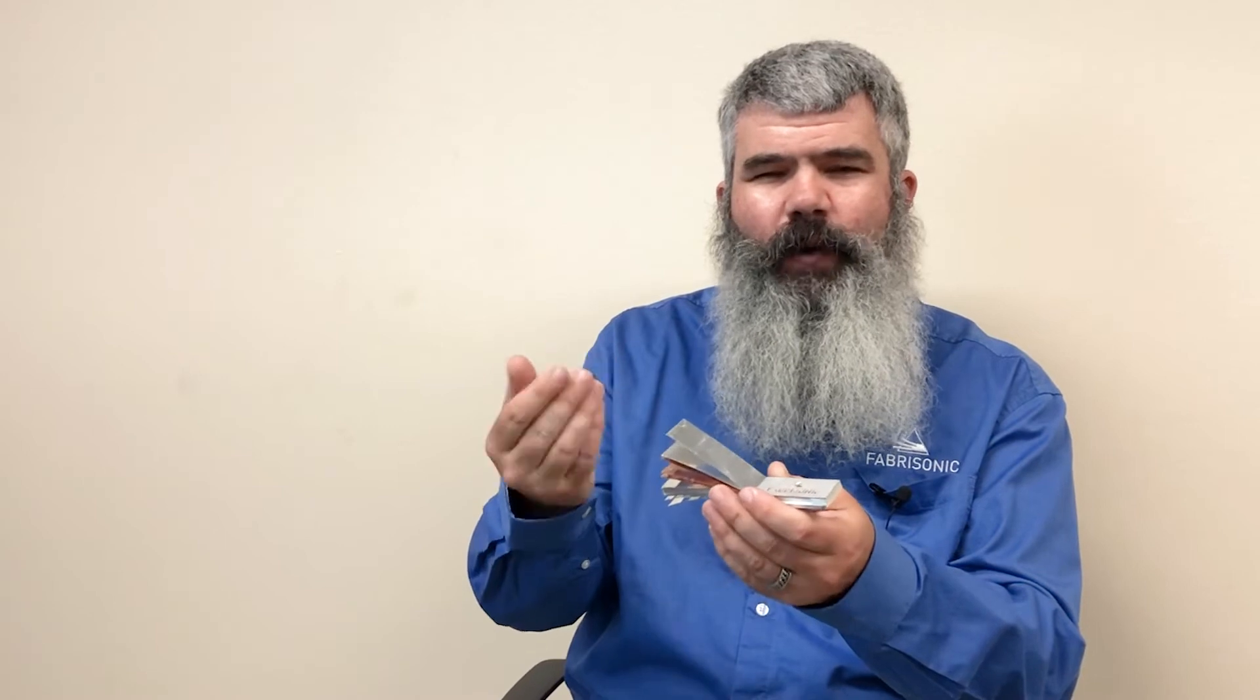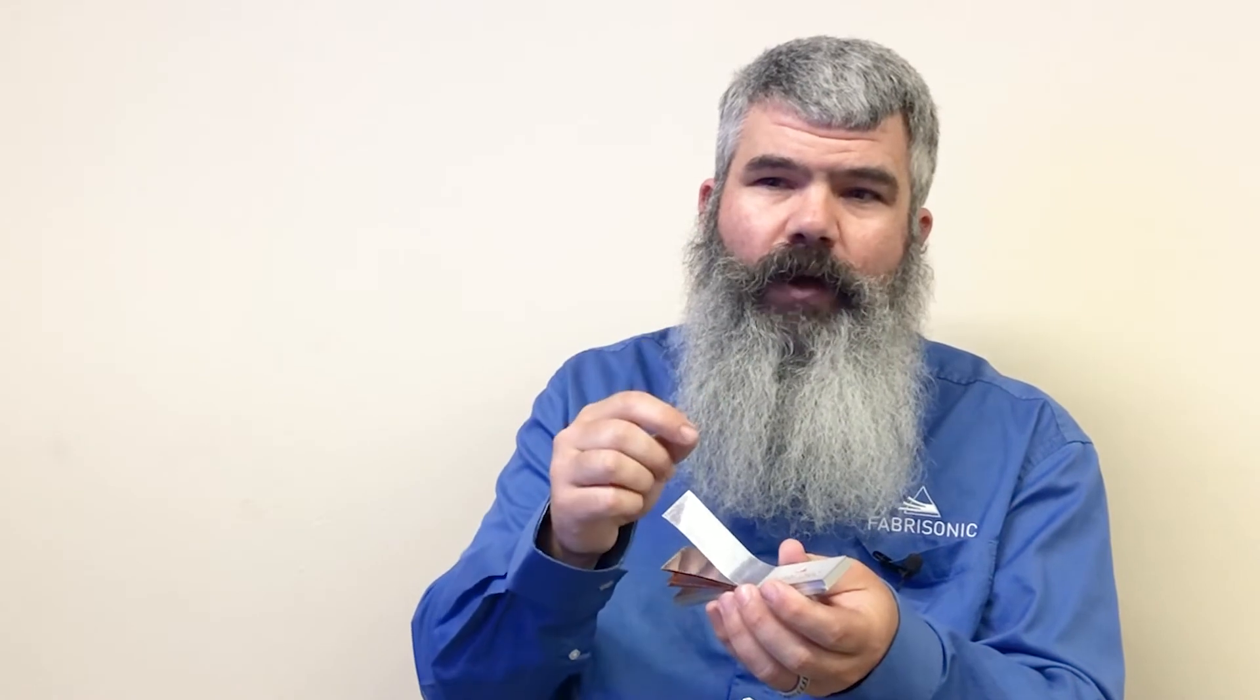Metals really like to stick to other metals. And if you take two pieces of metal here on Earth, they're always covered with an oxide layer. So if I take this sheet and fold it over and try and press it down, it doesn't bond. But with ultrasound, we can actually scrub away that oxide layer and put virgin metal on virgin metal.